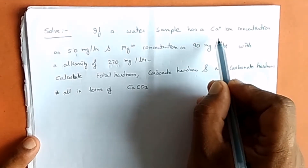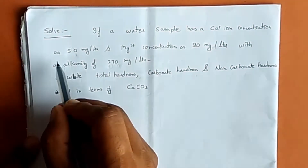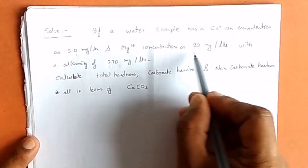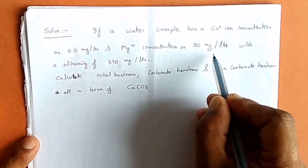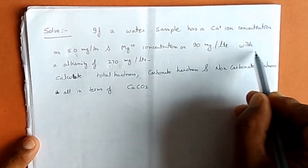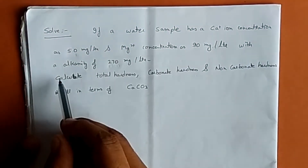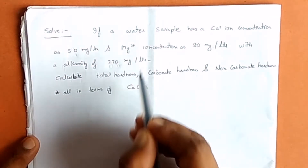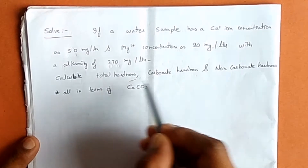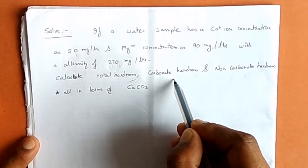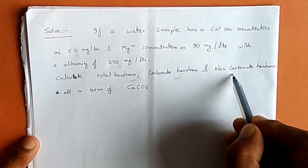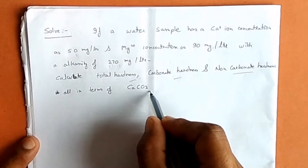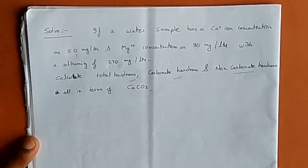If a water sample has a calcium ion concentration of 50 mg per litre and magnesium ion concentration of 90 mg per litre, with an alkalinity of 270 mg per litre, calculate the total hardness, carbonate hardness, and non-carbonate hardness, all in terms of calcium carbonate.